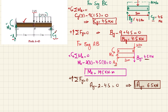Now we have all the unknown forces: C_Y = 4.5 kN, A_Y = 6.5 kN, and M_A = 19.5 kN·m. We will now draw the shear force and bending moment diagrams.